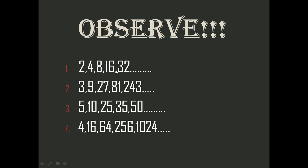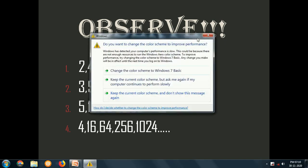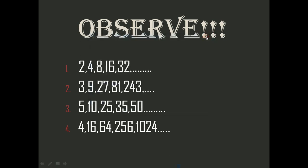In series two: 3 becomes 9 by multiplying by 3, 9 becomes 27 by multiplying by 3, and 27 becomes 81 by multiplying by 3, and so on. So consistently we are multiplying by 3 each time to get the next term from the preceding term.